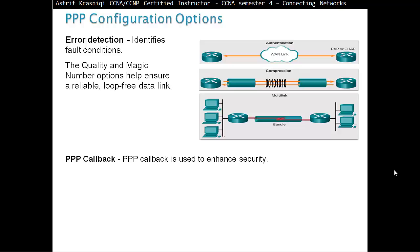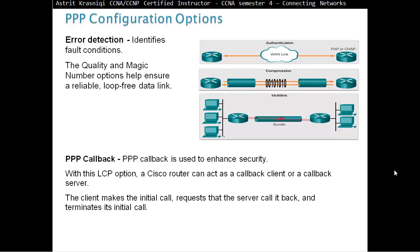PPP callback. PPP callback is used to enhance the security. With this LCP option, a Cisco router can act as a callback client or a callback server. The client may make initial call, request a server callback and terminates its initial call. The callback router answers the initial call and makes the return call to the client based on its configuration statement.